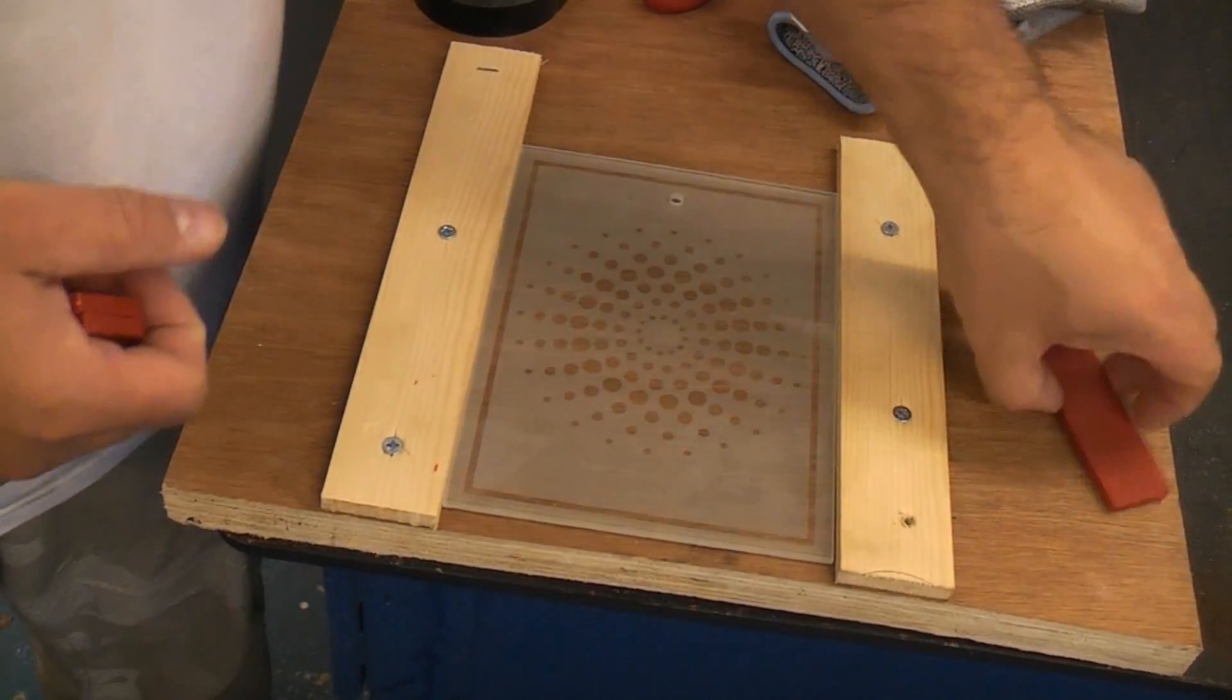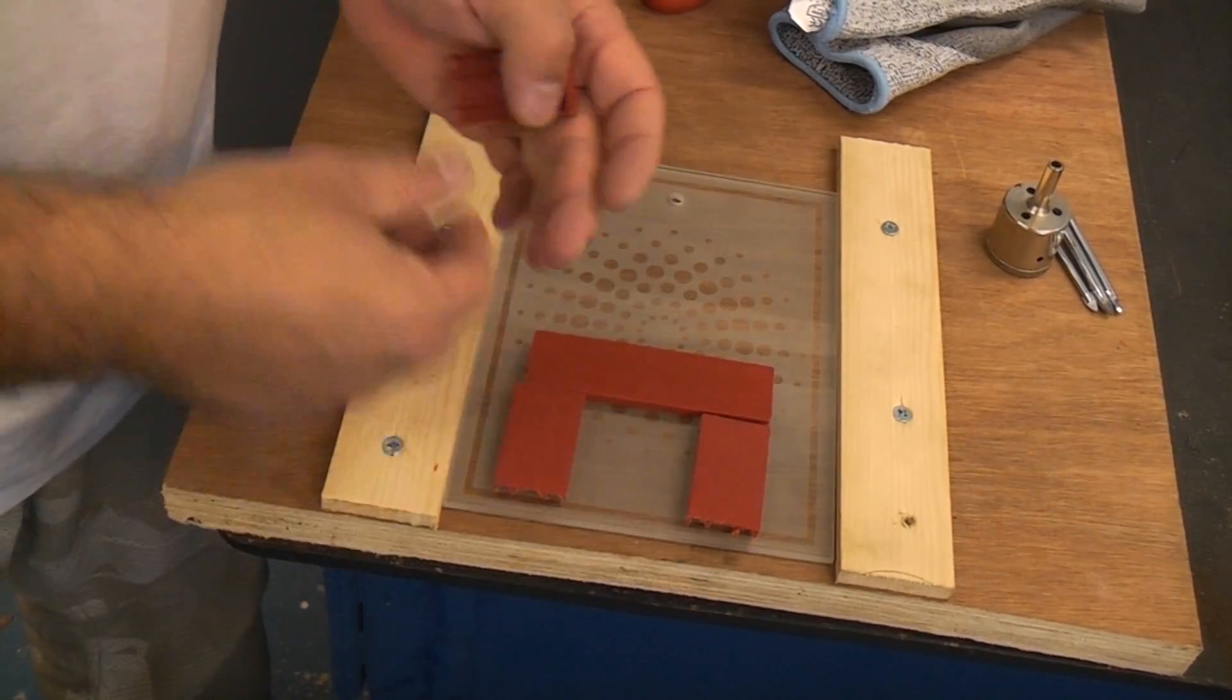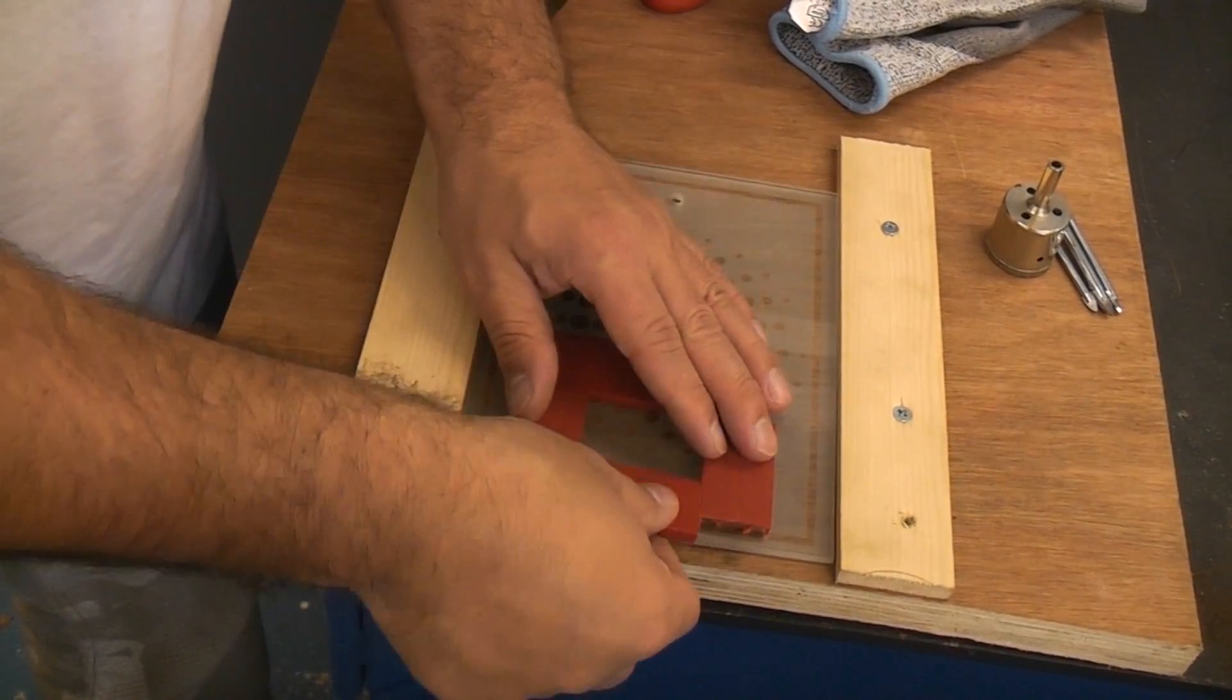If you don't have any putty, you can make a well using some plastic shims and some insulation tape.